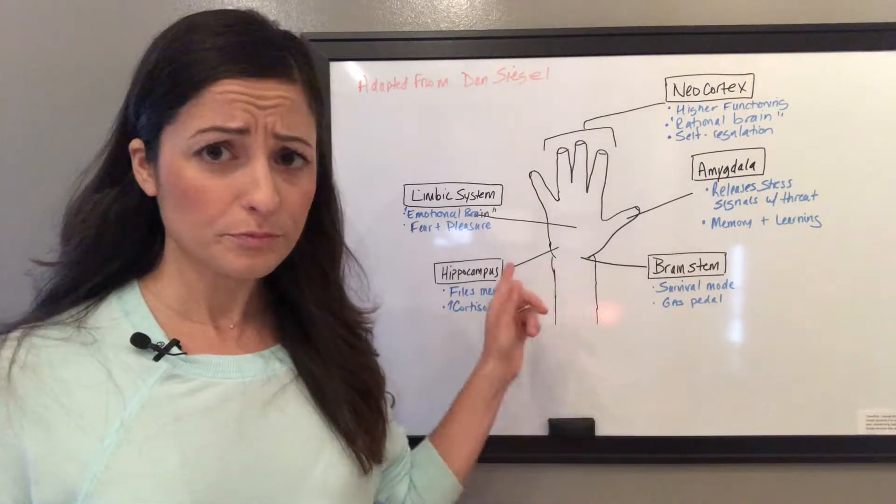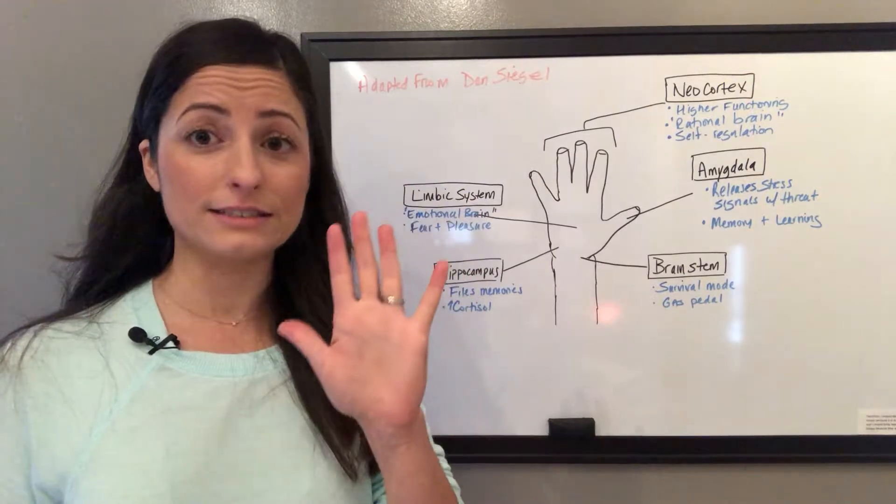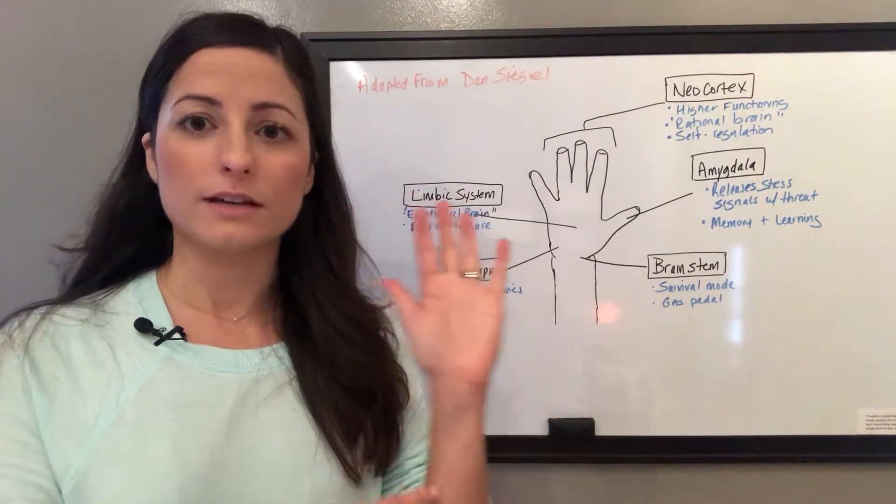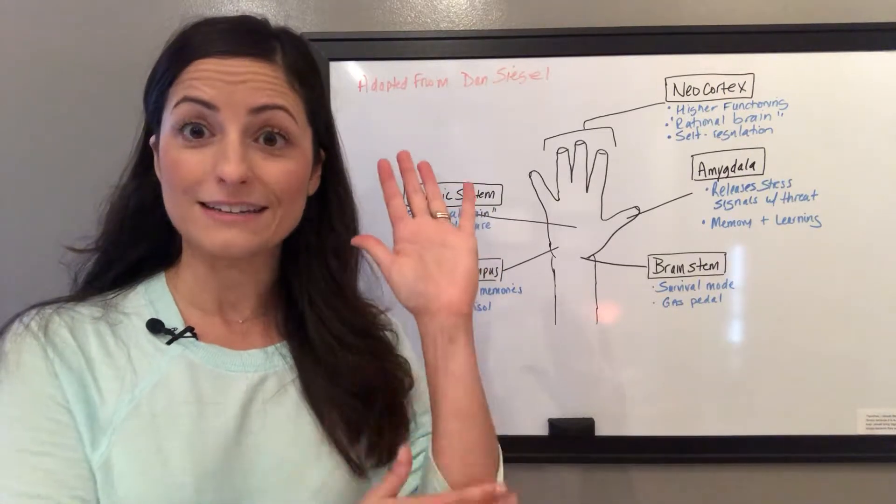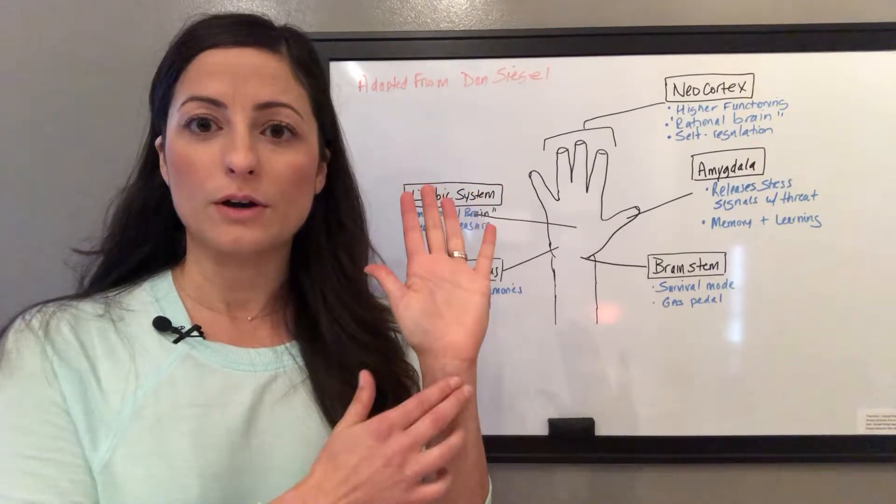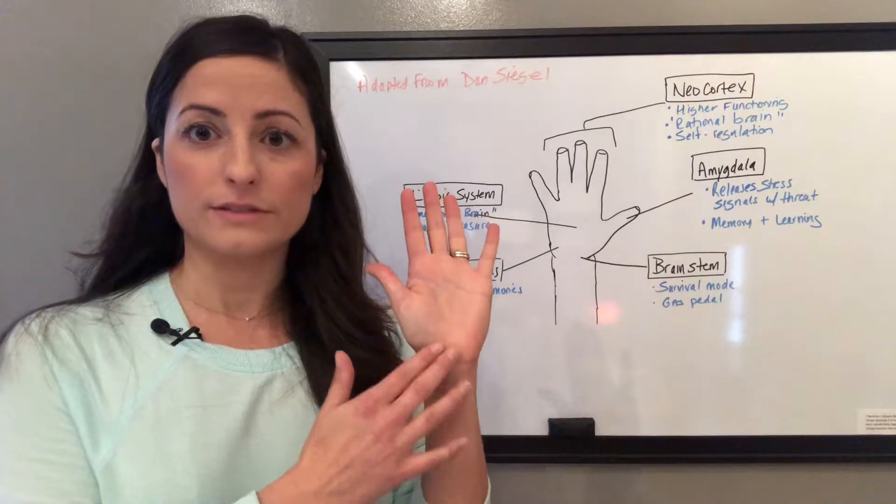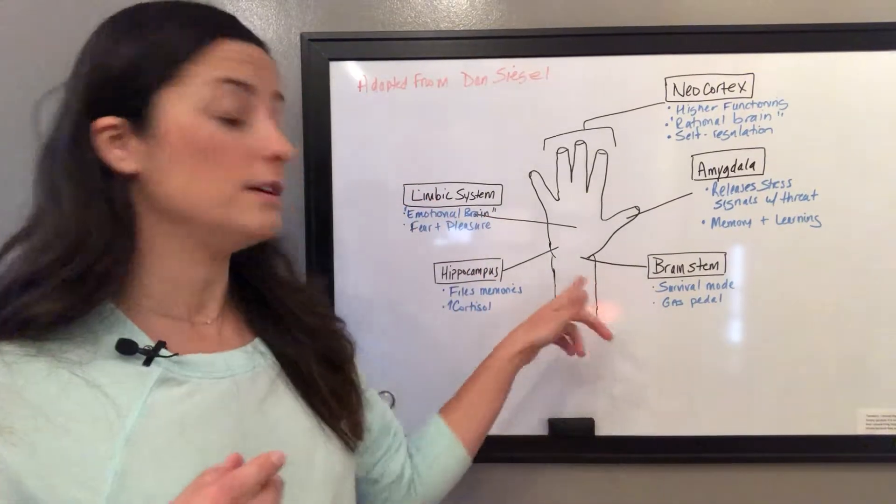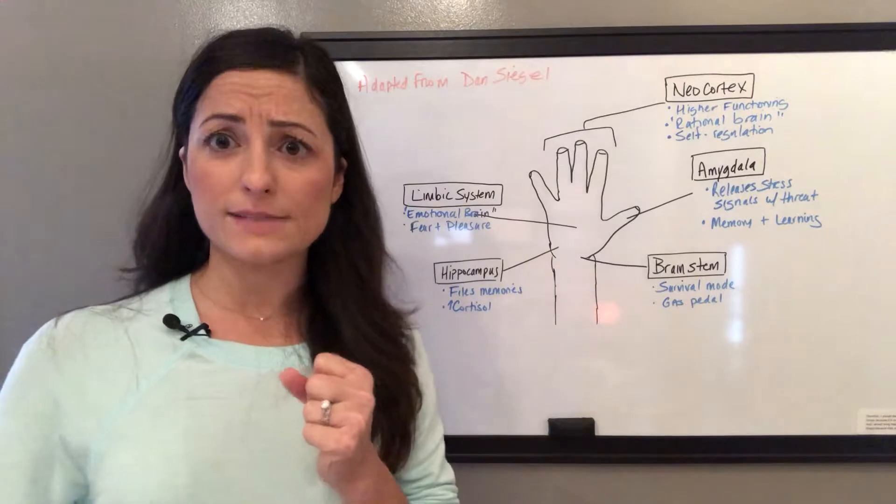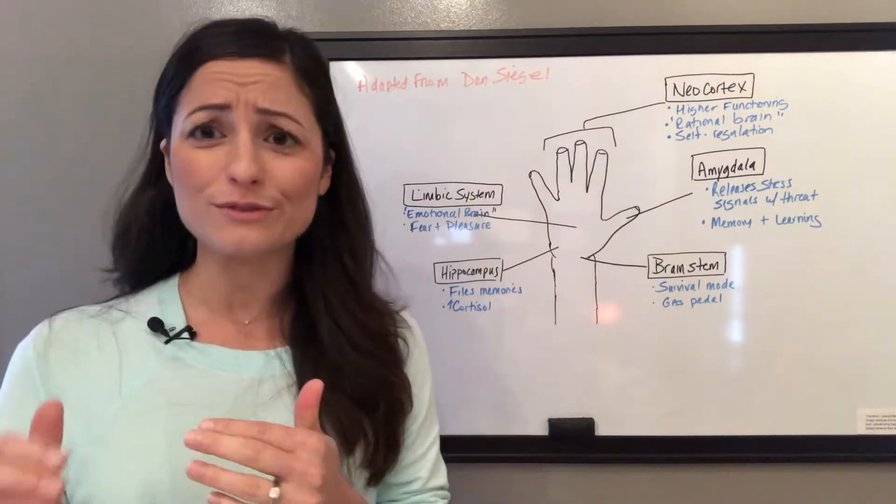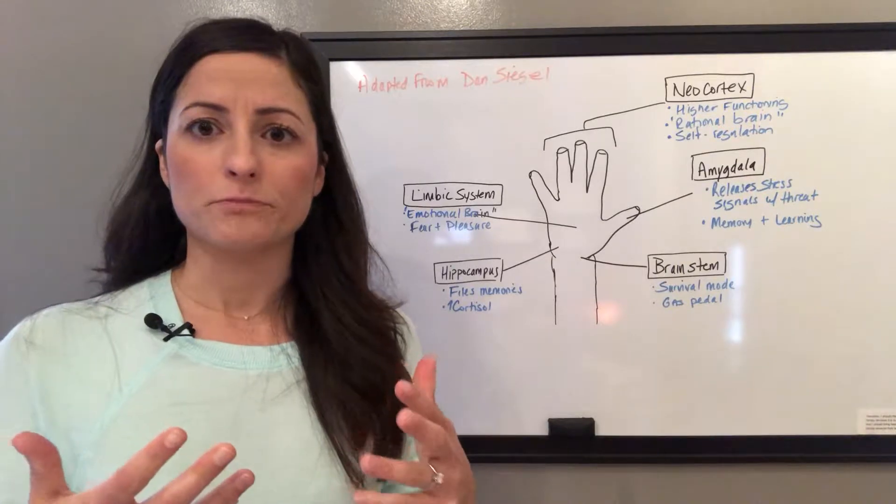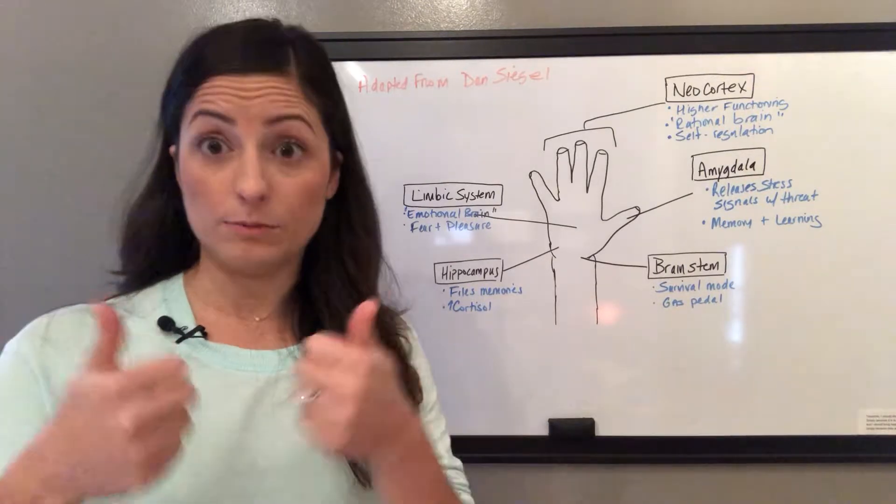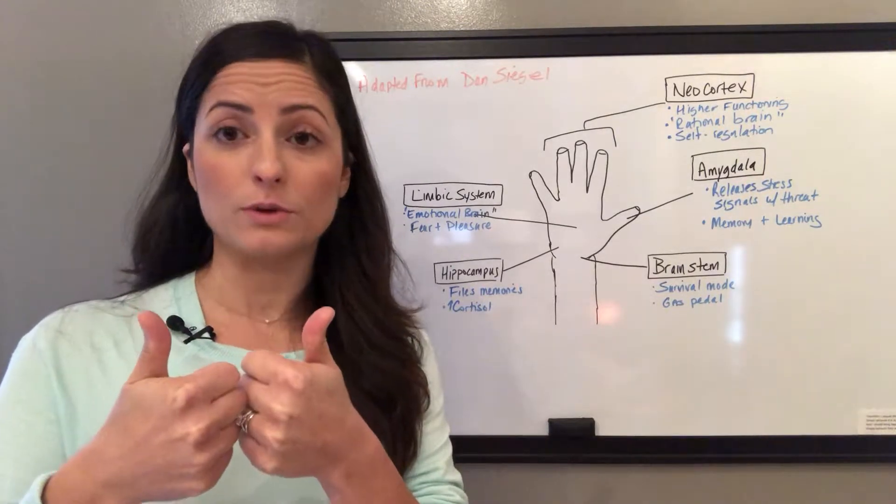So if you take your hand and follow along with me, this is the spinal cord or the rest of your body. This part of the brain and the nervous system is the brainstem, which is more of the survival mode, gas pedal, pedal to the metal, fight or flight, primitive reflex, really automatic to help keep you in survival mode. Great when you're running away from a mountain lion.